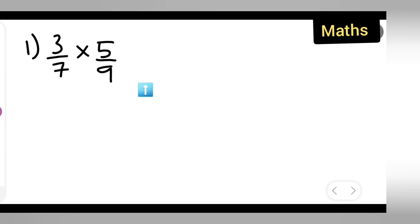So let us see how to evaluate this problem. First, write down this in stepwise order: 3 upon 7, you can write it as 5 upon 9.